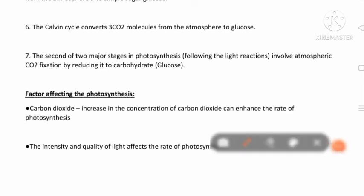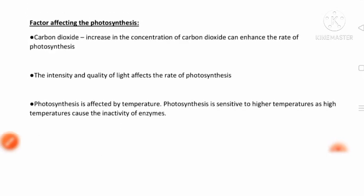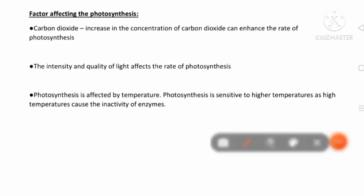The Calvin cycle is the second of the two major stages in photosynthesis, following the light reaction, and involves atmospheric CO2 fixation by reducing it to carbohydrate glucose. Photosynthesis has two processes: light reaction and dark reaction. In light reaction, light is required; in dark reaction, light is not necessarily required. Through these reactions, plants form oxygen and food. This is studied in more detail in higher classes.